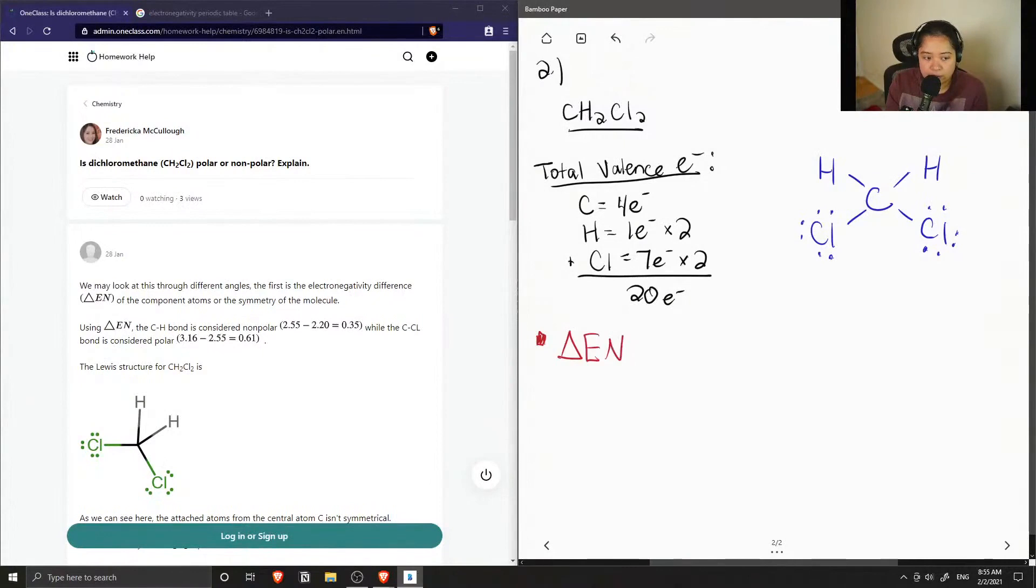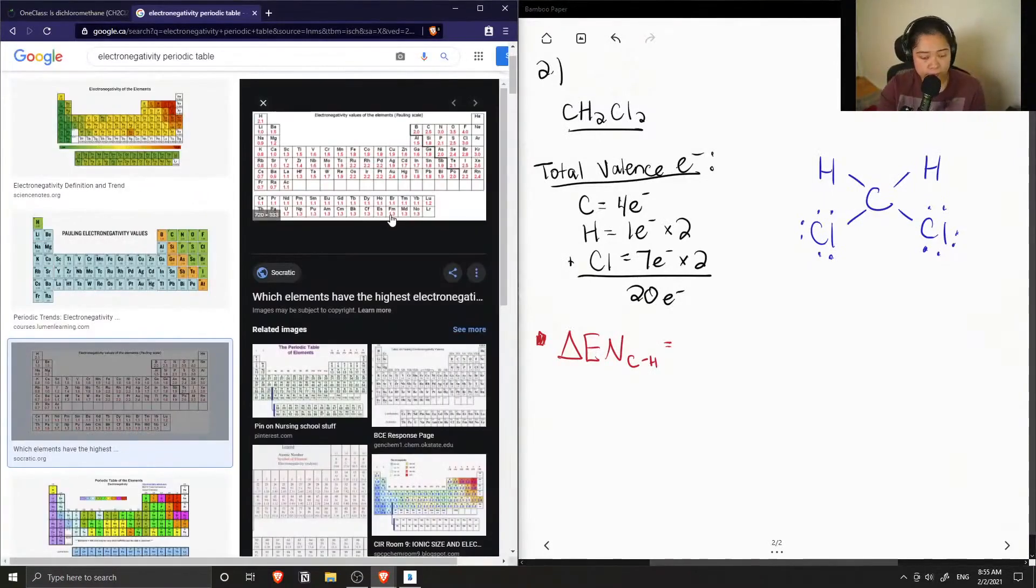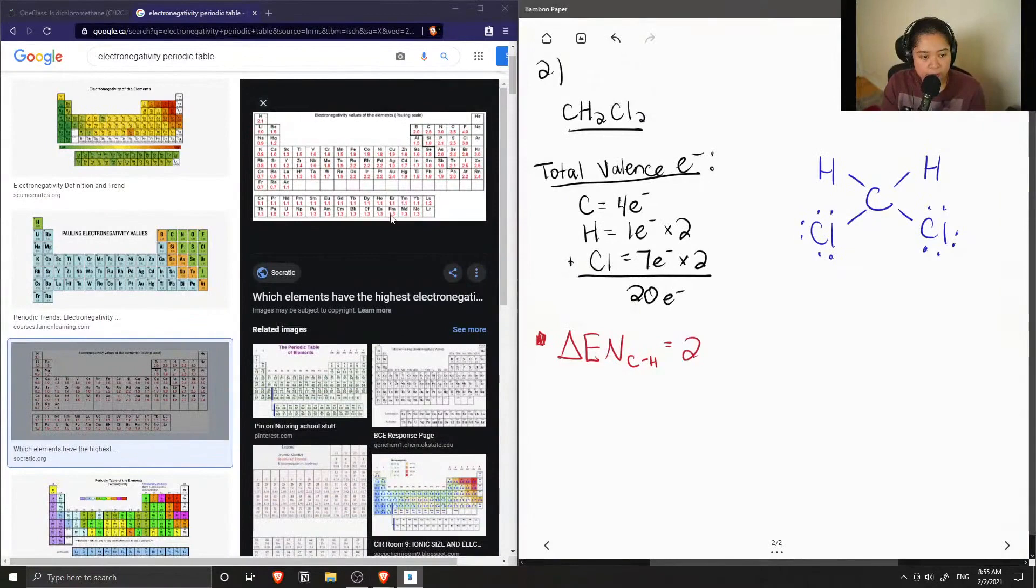So first, let's do carbon and hydrogen to see if these bonds are polar. Okay, so the electronegativity value of carbon is 2.5 and for hydrogen, it's 2.1.